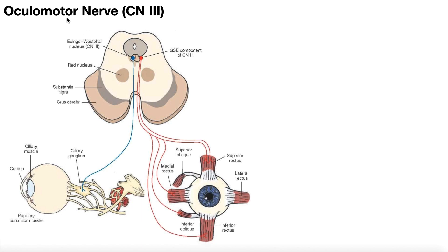However, the motor function can be divided into somatic motor function and parasympathetic motor function. And for that reason, we're going to divide these two functions into two separate videos. So here we'll be talking about the somatic motor function of the oculomotor nerve.